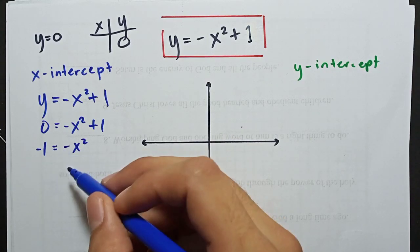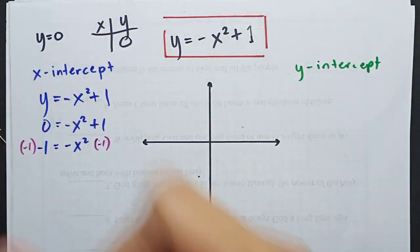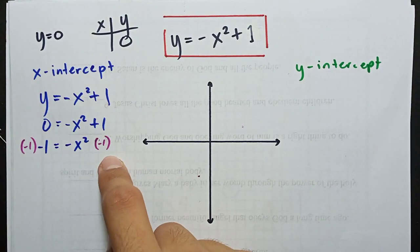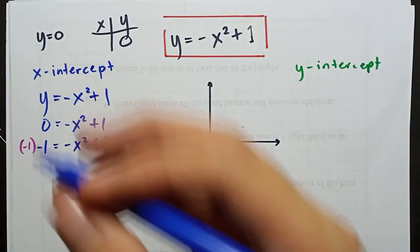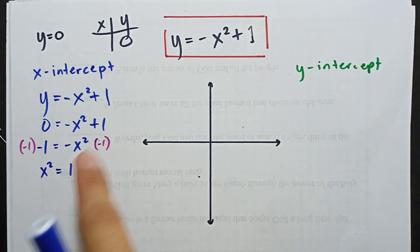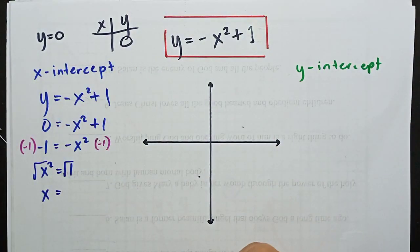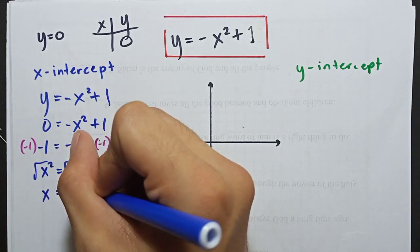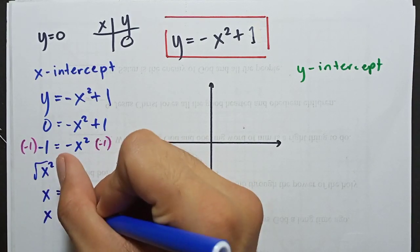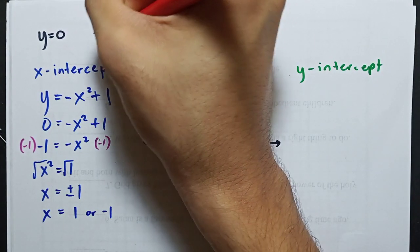Then, since both have negative signs, we can multiply both sides by negative 1. When you multiply both sides by negative 1, it becomes positive. Like this: negative 1 times negative 1. So we didn't violate any rule because we multiplied the right side of the equation, we also multiplied the left. So it's the same. It becomes x squared equals 1. Because negative 1 times negative 1 is 1. Negative x squared times negative 1 is x squared, positive. I just reversed this. It's okay to reverse it. Then, get the square root. Square root of x squared, square root of 1. It becomes x equals positive or negative 1. So we have x equals 1 or negative 1. So when our y is 0, our x can be 1 or negative 1.